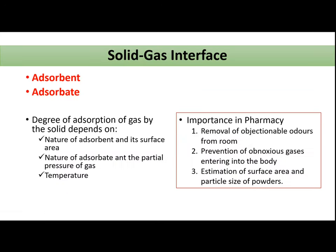Under the solid interface, first we will discuss about the solid-gas interface. Whenever we talk about the interface with respect to solids, we encounter two terms: first is adsorbent and second is adsorbate. Adsorbent is the material which is used to adsorb the gas — that is the solid — and the gas which is getting adsorbed is the adsorbate.